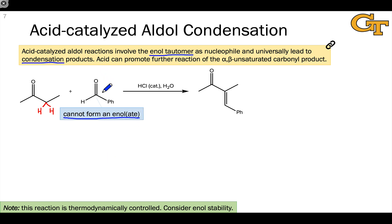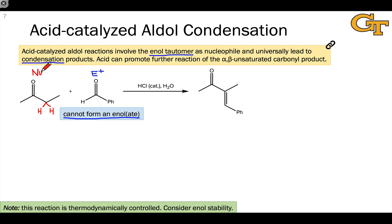This means that benzaldehyde, this molecule without the alpha hydrogens, is necessarily acting as the electrophile in this reaction, while methyl ethyl ketone, which does have alpha hydrogens and therefore is enolizable — in other words, can form an enolate — is serving as our nucleophile.